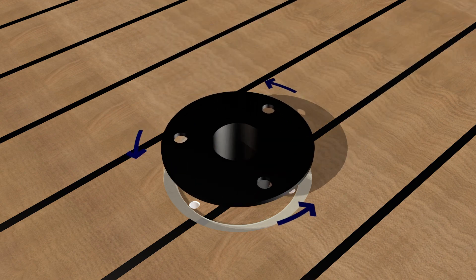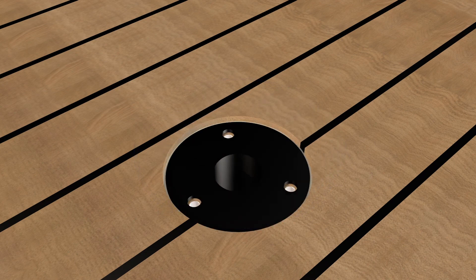Insert the flush fitting fixing into the hole, ensuring the screw holes are aligned with the pilot holes. Insert the black plastic insert into the fixing.